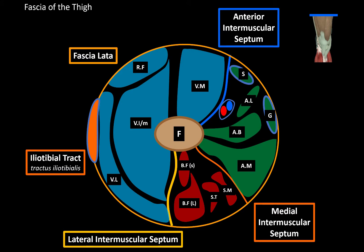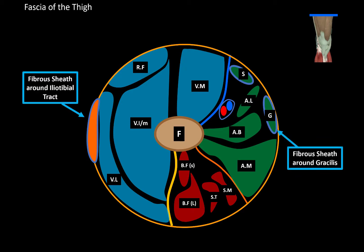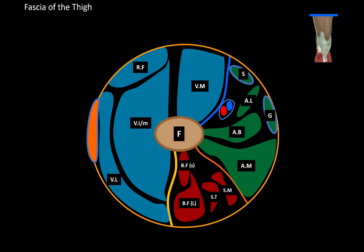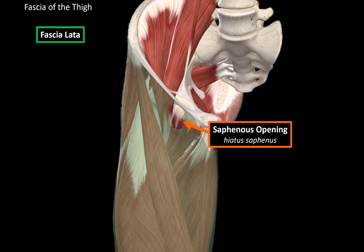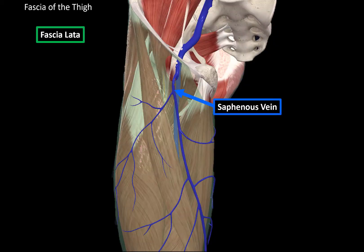Now we have an overview of the fascia of the thigh. The fascia lata forms a fibrous sheath around the iliotibial tract, around the gracilis, around the sartorius, and around the femoral artery and vein. Notice that there is a hole called the saphenous opening, or hiatus saphenus. Structures like the saphenous vein pass through this opening, and it is covered by a fascia called the cribriform fascia.